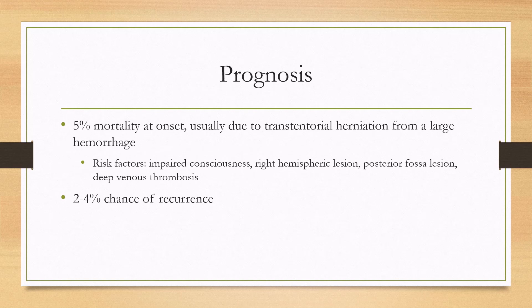For prognosis, about 5% of patients die at the onset of the disease due to transtentorial herniation from a large hemorrhage. Risk factors that predict death include impaired consciousness, a right-sided lesion, a posterior fossa lesion, or a deep venous thrombosis. There is also a 2–4% risk of recurrence of the disease.